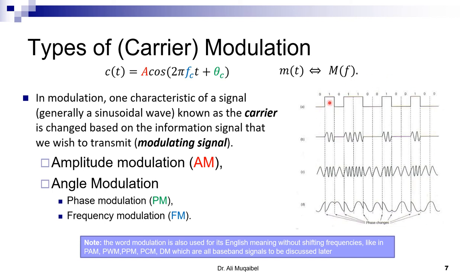For a digital message signal of zeros and ones, you can see that in amplitude modulation high amplitude represents one and no amplitude represents zero. In frequency modulation all signals have the same amplitude but different frequencies — high frequency means one, low frequency means zero. In phase modulation, amplitude and frequency are the same, but the starting phase differs — low-to-high represents one, high-to-low represents zero. This is phase modulation.